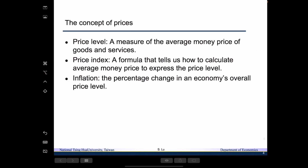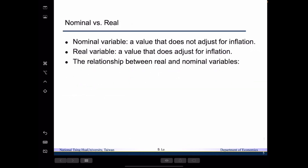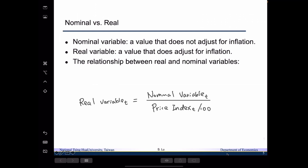Before we talk about the GDP deflator and CPI in detail, we want to introduce more terminology. The terminologies we want to look at are nominal versus real. A nominal variable is defined as a value that does not adjust for inflation. A real variable is a value that adjusts for inflation. The relationship between the real and nominal variable is defined as: real variable equals the nominal variable divided by the price indices divided by 100.